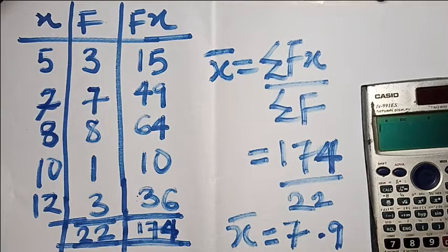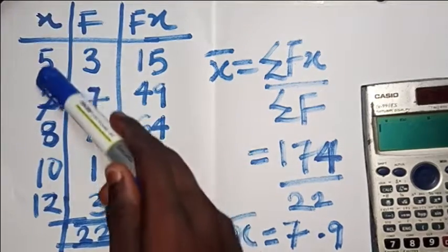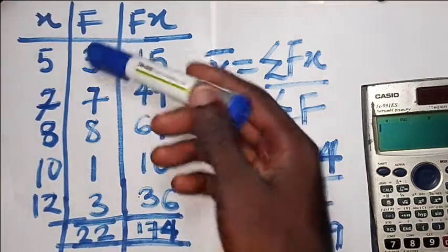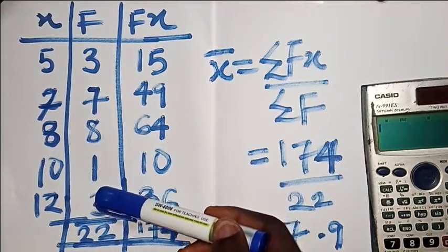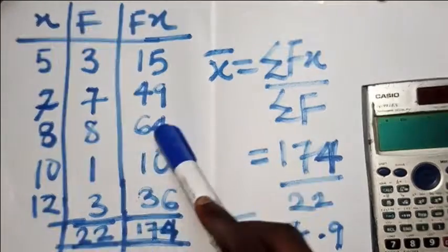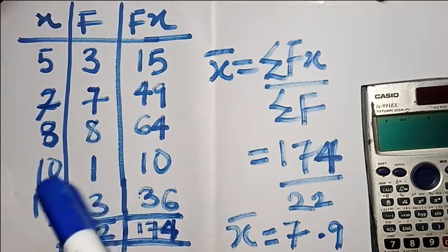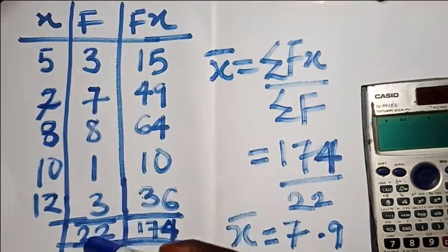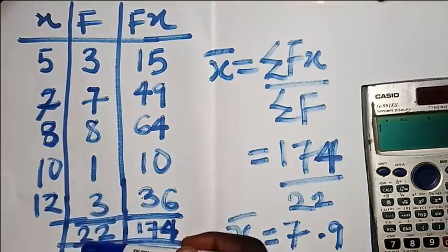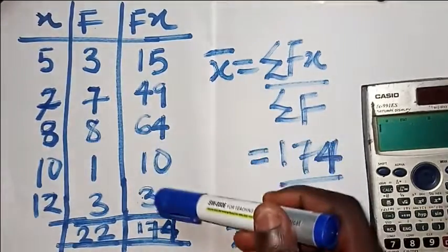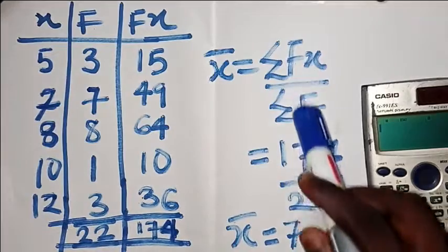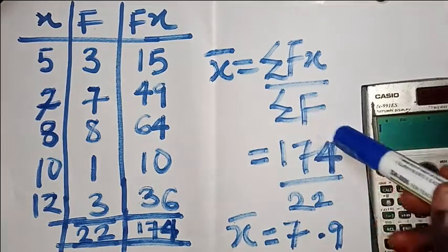If I have a question where X equals 5, 7, 8, 10, and 12 — these are my class marks — and I have my frequencies as 3, 7, 8, 1, 3, then summation FX is: 5×3=15, 7×7=49, 8×8=64, 10×1=10, 12×3=36. The summation of frequencies is 3+7+8+1+3 = 22, and summation FX is 15+49+64+10+36 = 174.